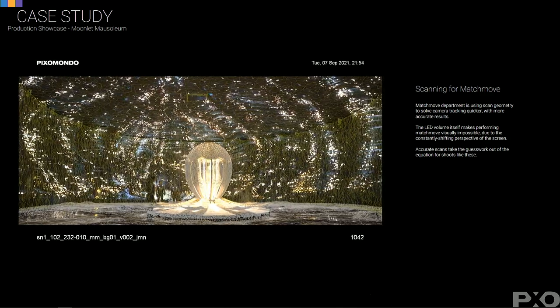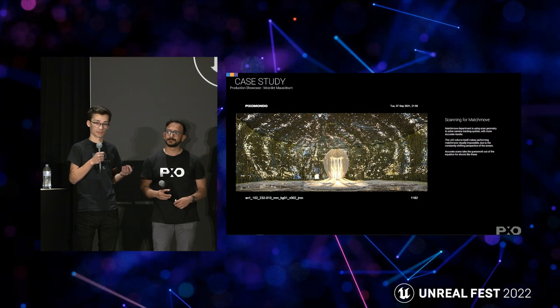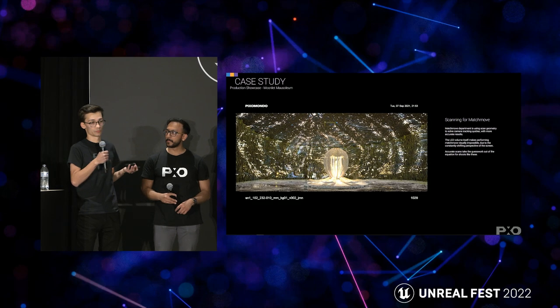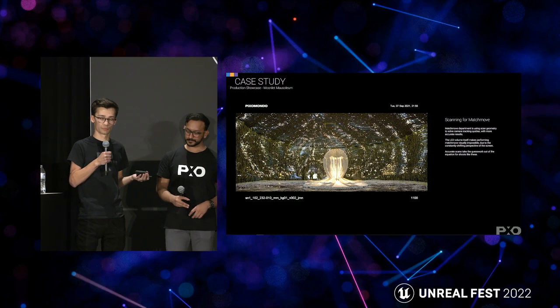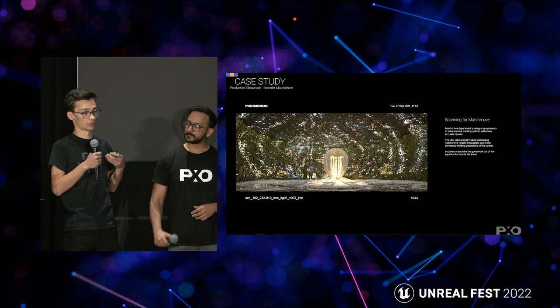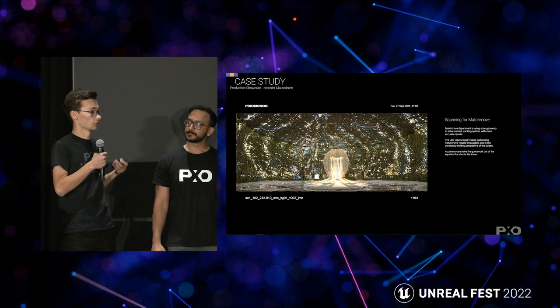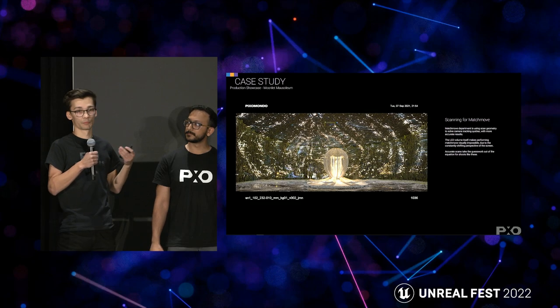For example, a location scan that is 50 million polygons raw can go as low as maybe 100,000 triangles or lower for matchmove — heavily decimated. This helps with optimization so their machine doesn't crash. They can load only the low version to preview and work, and if someone needs higher resolution, they step up to the mid version.